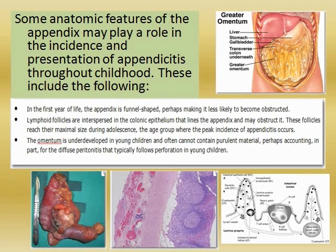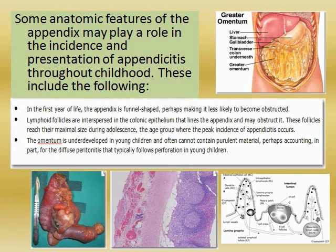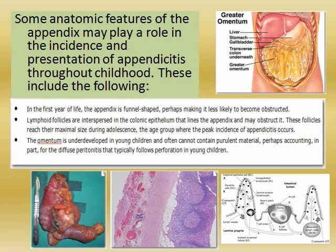The third anatomic peculiarity is that the omentum is underdeveloped in young children and often cannot contain pooled material, perhaps accounting in part for the diffuse peritonitis that typically follows perforation in young children. The panel on the upper right shows the greater omentum, liver, gallbladder, stomach, and transverse colon underneath the omentum. This greater omentum specimen is from an adult. In children, it is not as well developed.